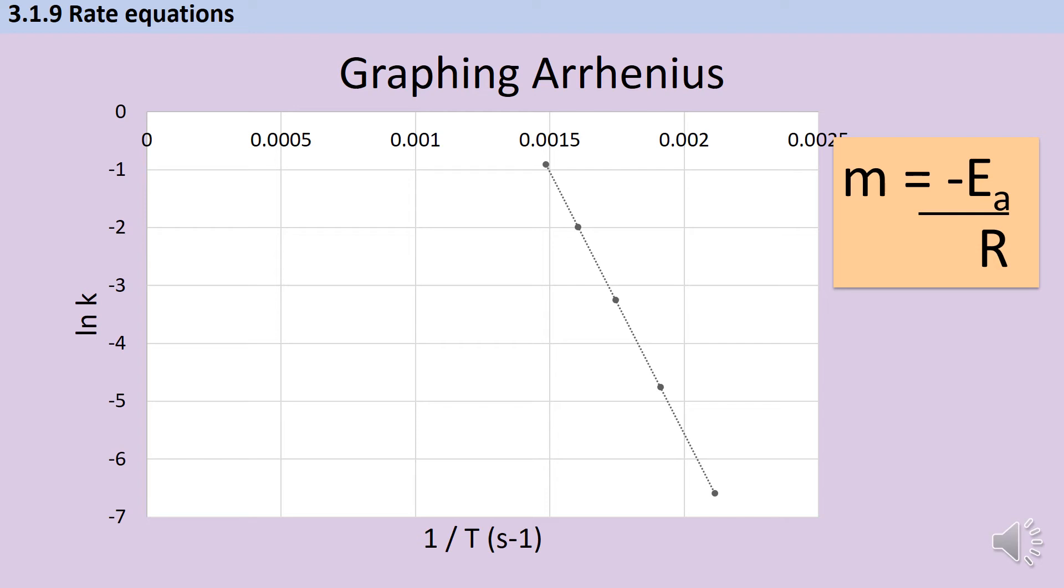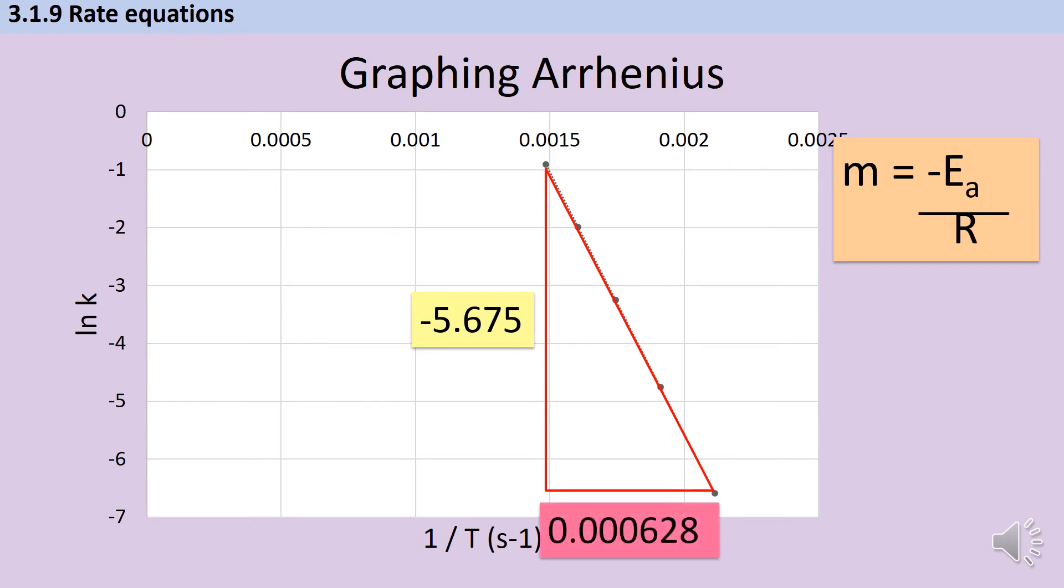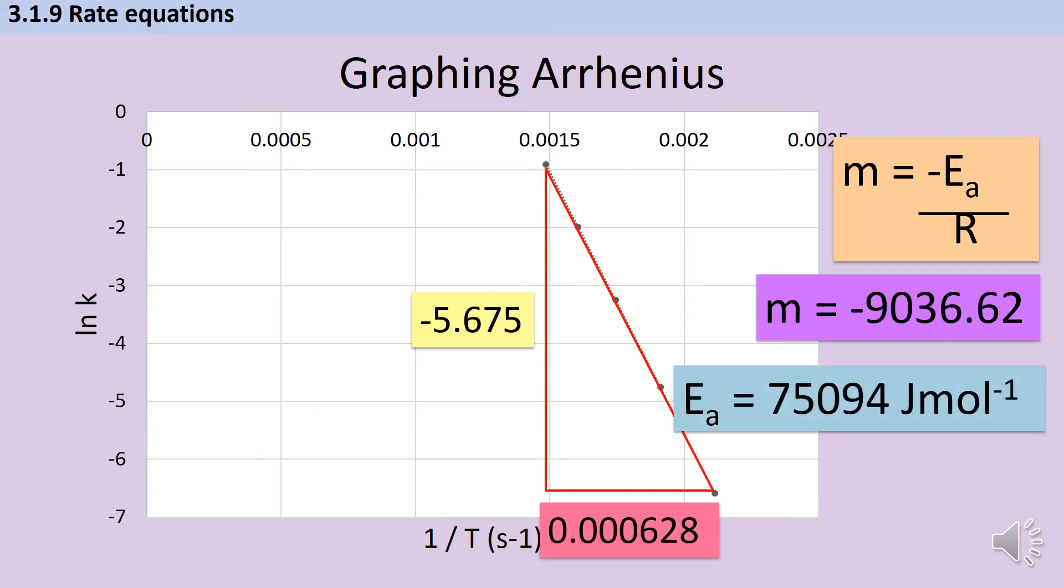To work out the gradient, I do the change in y divided by the change in x. Based on these numbers, I can see that my change in y is going to be minus 5.675, and my change in x is going to be 0.000628. So if I divide y by x, I get a gradient of minus 9,000-ish, and I can then multiply that by the gas constant 8.314 to work out that my activation energy is going to be about 75,000 joules per mole.